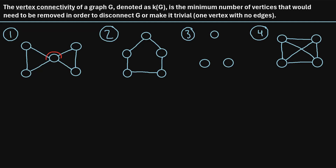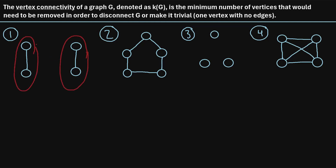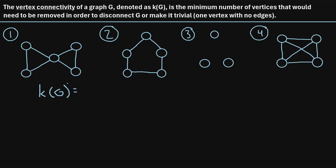If we look at this vertex right here in the middle of the graph and remove it, then each of the edges that are incident to it would also be removed. If we remove that middle vertex, we create a disconnected graph because there's no way to go from these vertices to these other vertices by traveling along a sequence of edges. So all we had to do was remove one vertex, meaning the vertex connectivity, kappa of G for this graph, is just one.